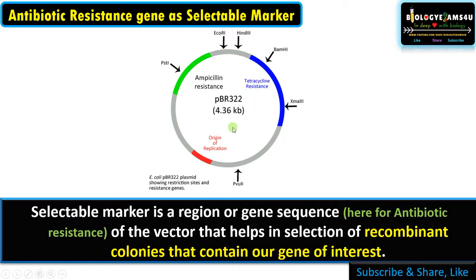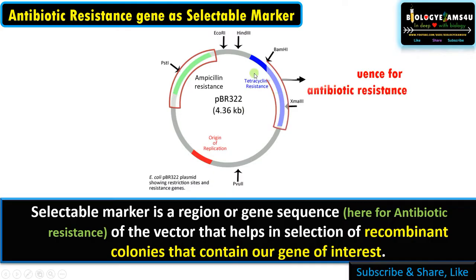Let's take an example: the PBR322 vector. As you can see, there are two selectable marker regions. This is the ampicillin resistance region and this is the tetracycline resistance region. These are actually gene sequences that make proteins which provide antibiotic resistance.